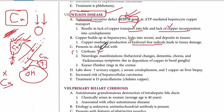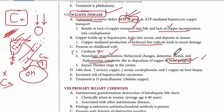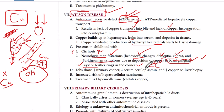We also have neurological manifestations because copper accumulates in the brain and damages it via hydroxyl free radicals. The main site is the basal ganglia, which is related to movement disorders — so we can have Parkinson-like symptoms, chorea, and abnormal movements of the hands, as well as dementia and behavioral changes. Copper also deposits in the cornea of the eye, forming a colored ring called a Kayser-Fleischer ring.